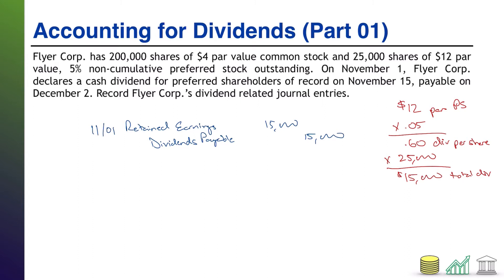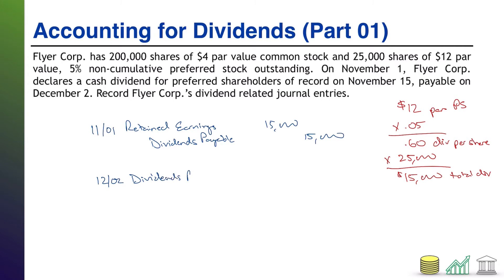On November 15th, that is the date of record for preferred shareholders to be holding the stock in order to receive the dividend. Nothing actually happens from an accounting standpoint on that date, so we need no journal entry. However, we are going to pay the dividend on December 2nd. On that day, we reduce our liability: debit dividends payable $15,000. Because we have now paid out the cash, credit cash $15,000.